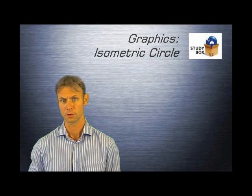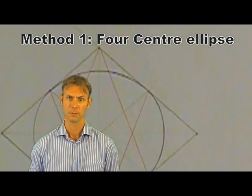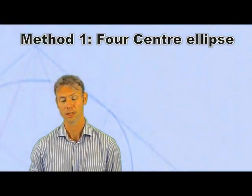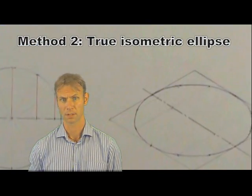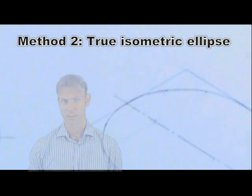I'm going to show you two methods for drawing isometric circles. The first method is called the force center ellipse, and the second method is called the true isometric ellipse. Let's get started.